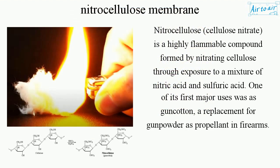Nitrocellulose, or cellulose nitrate, is a highly flammable compound formed by nitrating cellulose through exposure to a mixture of nitric acid and sulfuric acid. One of its first major uses was as guncotton, a replacement for gunpowder as a propellant in firearms.